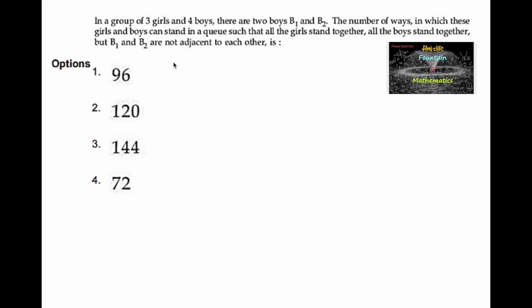In a group of three girls and four boys, there are two specific boys B1 and B2. The number of ways in which these girls and boys can stand in a queue such that all the girls stand together, all the boys stand together, but B1 and B2 are not adjacent to each other.